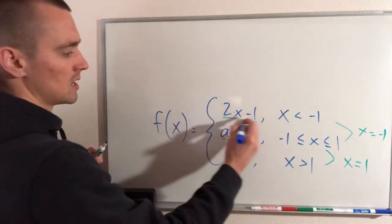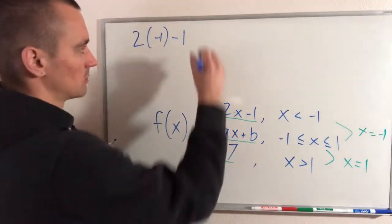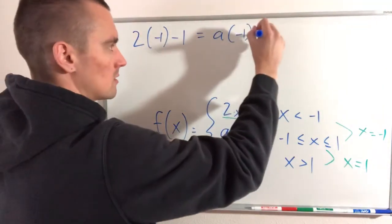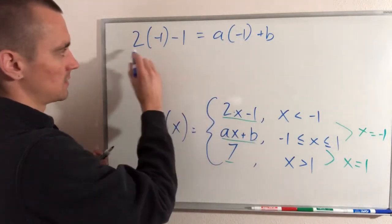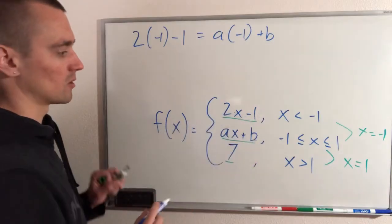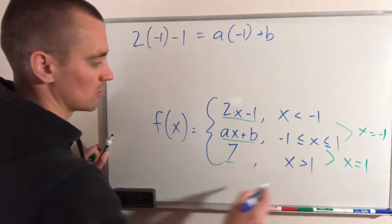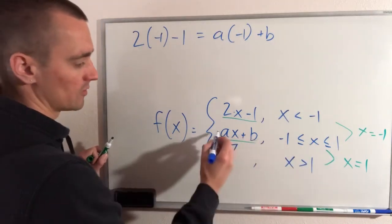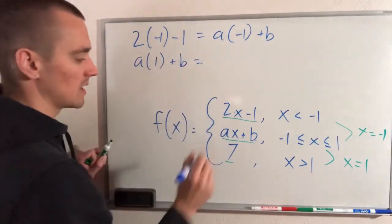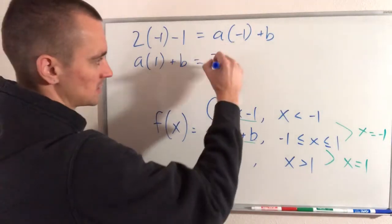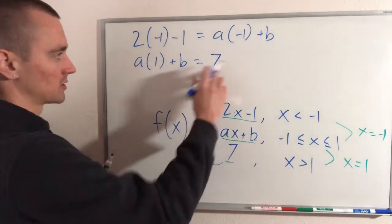When x = −1, the first function gives us 2 times −1 minus 1, and the middle function gives us a times −1 plus b. Those outputs must be equal. Then for x = 1, the middle function gives a times 1 plus b, and that must equal 7, since the third piece is just the constant 7 — its output is always 7 for any x value. So we need a and b to satisfy both of these equations.